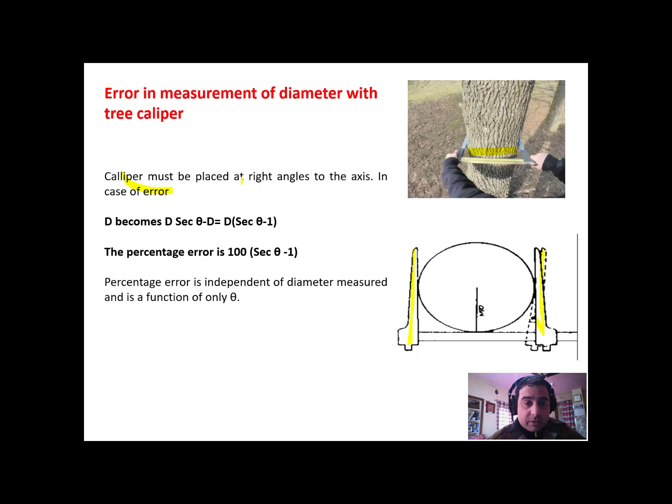Caliper must be placed at right angles to the axis because the d in that case becomes d sec theta minus d and the percentage error is 100 sec theta minus 1. You have to remember this percentage error is independent of diameter measured and is a function of only theta. It doesn't matter how small or big a diameter is, it just depends on the angle of theta which it makes with the tree while the caliper arm is not placed at right angle. Thank you.